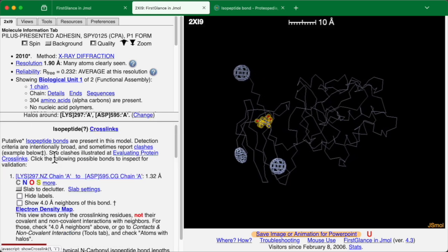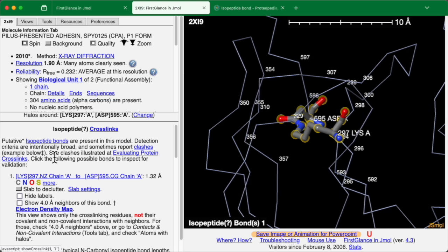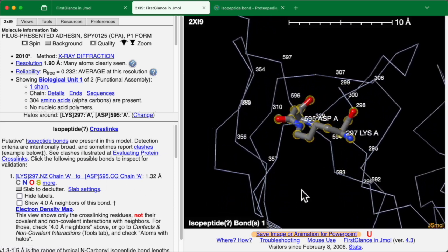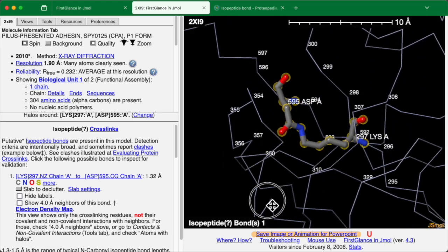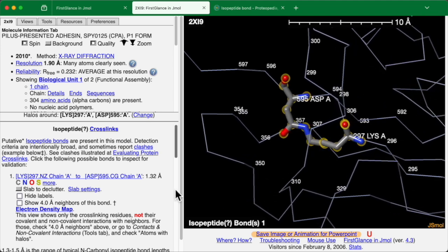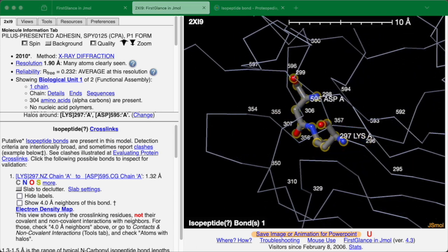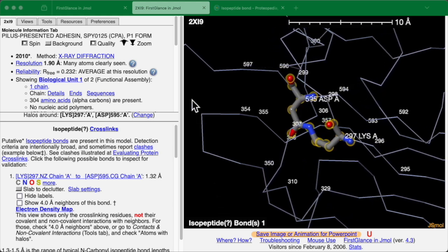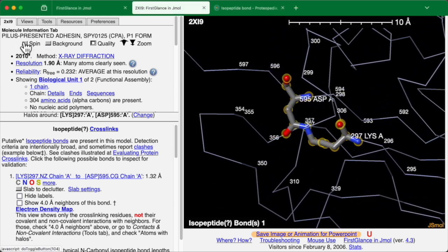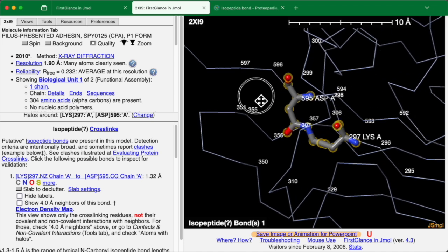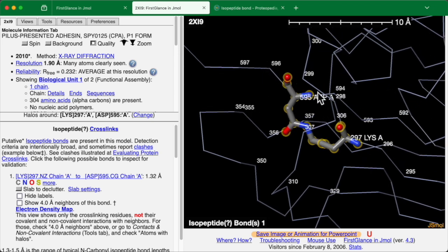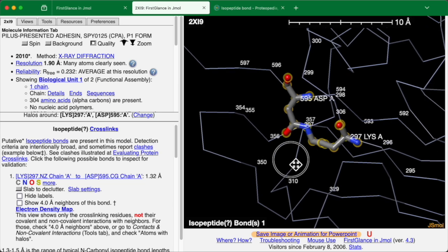A little movie plays showing you where the putative isopeptide bond is in the structure and zooming in and allowing you to examine it in atomic detail. I'll turn off spinning and these thin blue lines are backbone traces. And we see that along this backbone trace, we have aspartic acid 595. Here are the main chain atoms. Here's the side chain.